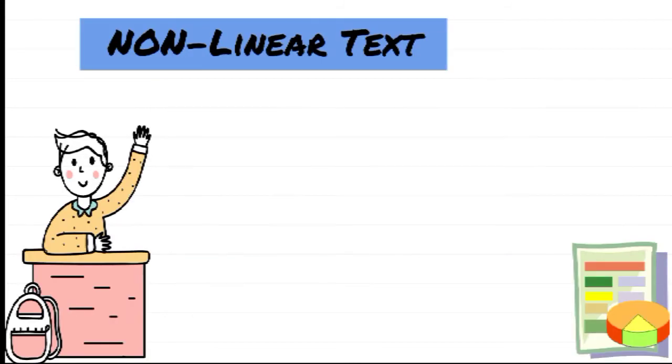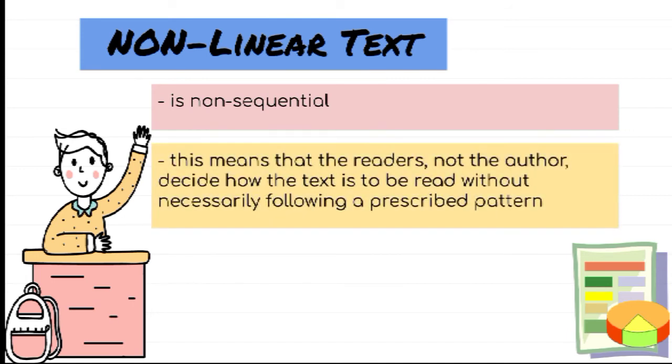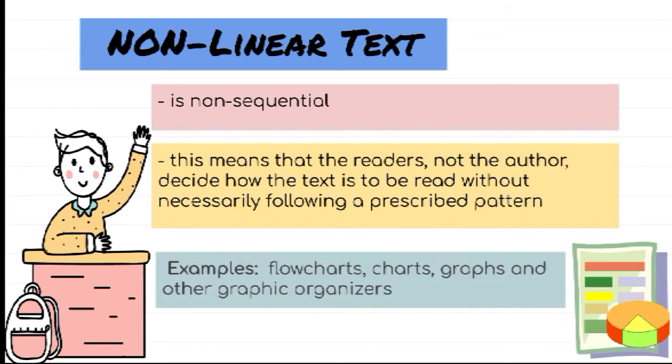Next one is the non-linear text. On the other hand, it is non-sequential. This means that the reader, not the author, decides how the text is to be read without necessarily following a prescribed pattern. The most common examples of non-linear text include flowcharts, charts, graphs, and other graphic organizers.